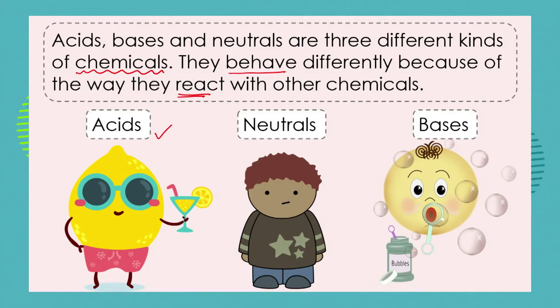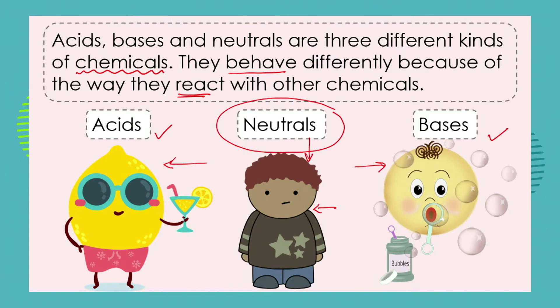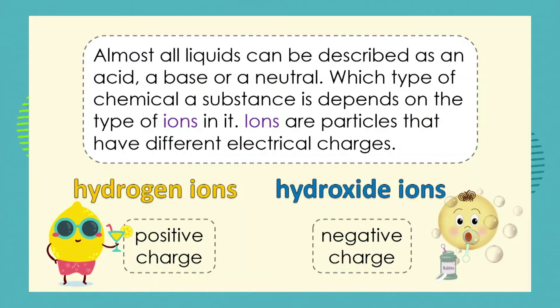So we've looked so far at acids — examples of acids and their properties. We've also looked at bases, examples of bases and the properties of bases. So now we have to focus on the little man in the middle, the neutral. Remember when we talk about something as being neutral, we refer to it as not having any particular one side or the other. So it's not an acid and it's not a base, it's somewhere in the middle. Almost all liquids can be described as an acid, a base or a neutral.